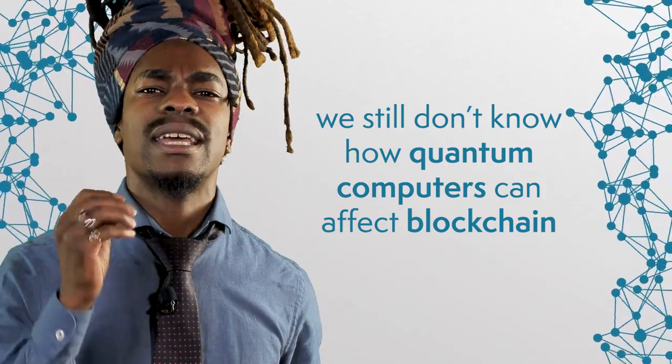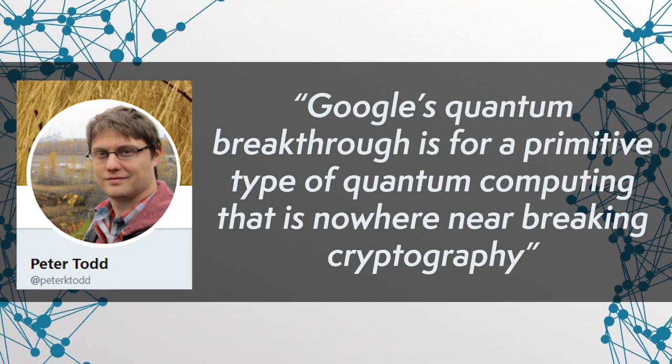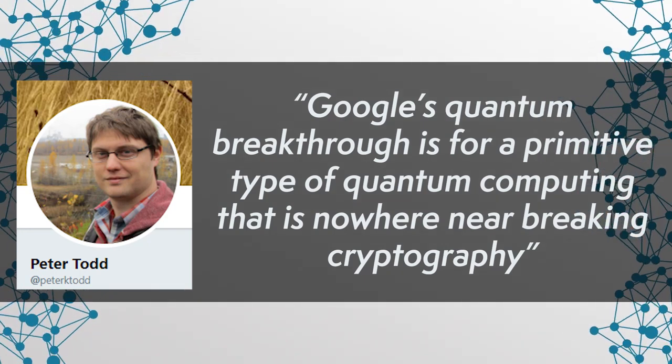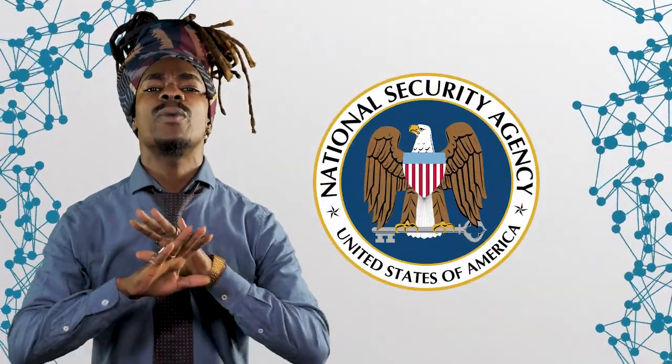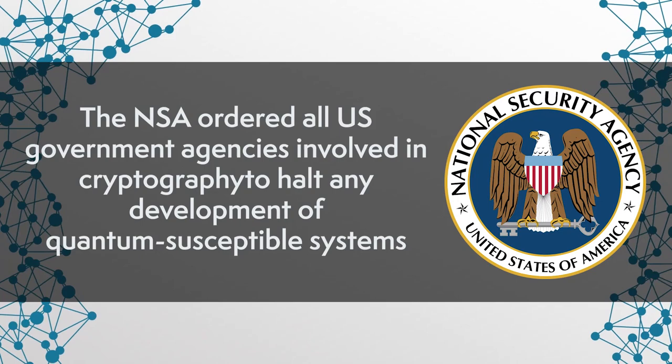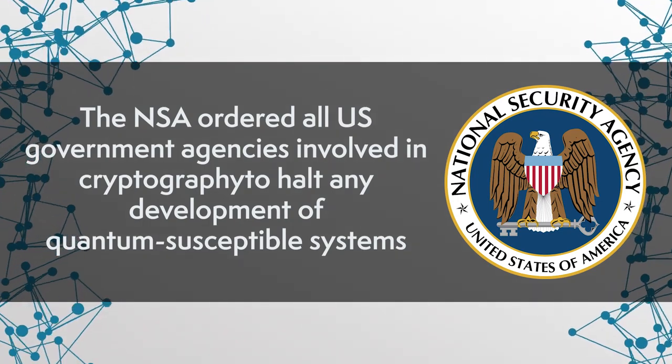The fact that we're still not completely sure what a fully fleshed-out quantum computer is capable of makes it even more difficult to predict its impact on blockchains. Some analysts predict that the technology might end up making DLT obsolete altogether. On the other side of the spectrum, we have quantum skeptics such as ex-Bitcoin core developer Peter Todd, who claimed that Google's quantum breakthrough is for a primitive type of quantum computing that is nowhere near breaking cryptography. One frequently quoted argument supporting the threat is the NSA's recommendation to all US government agencies involved in cryptography to halt any development of quantum-susceptible systems — a recommendation that was already issued four years ago.